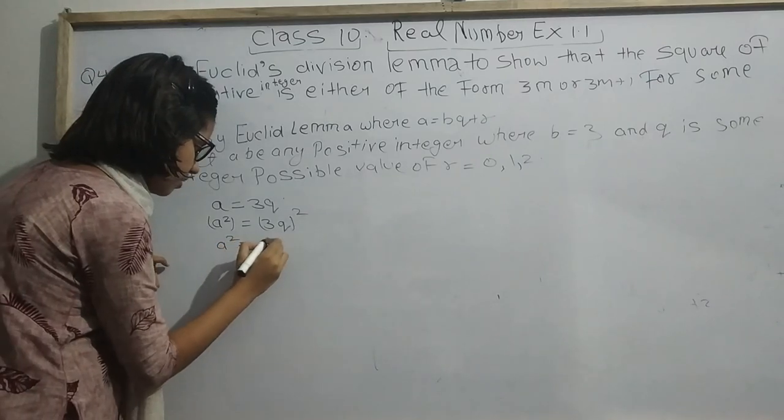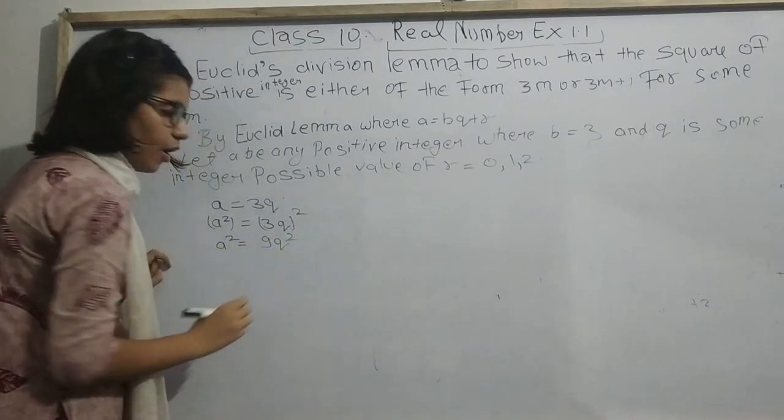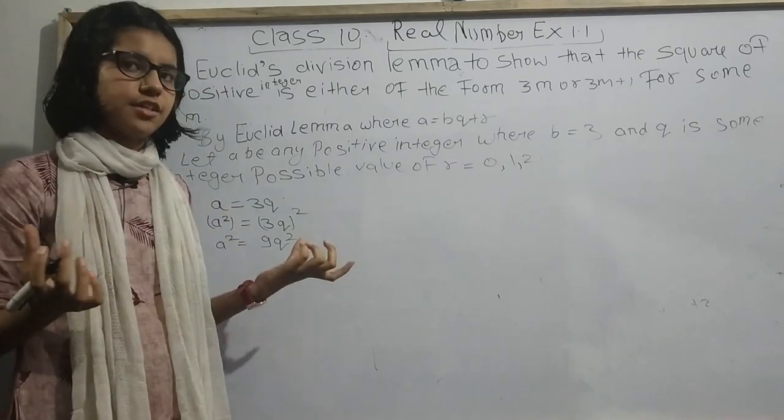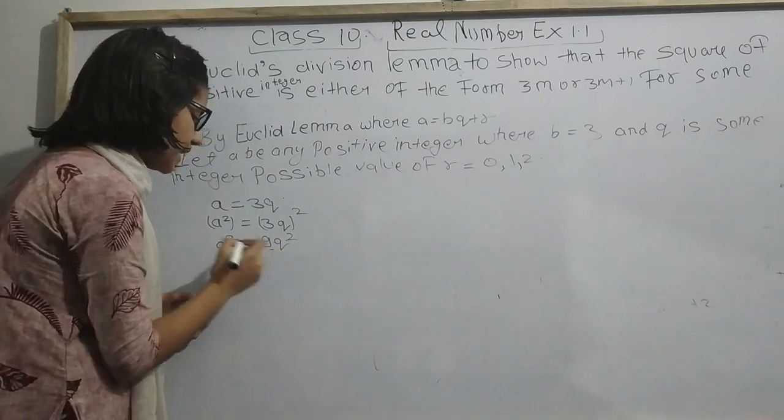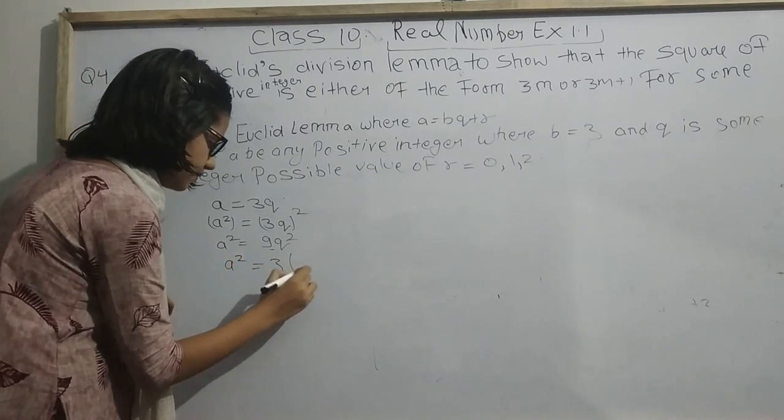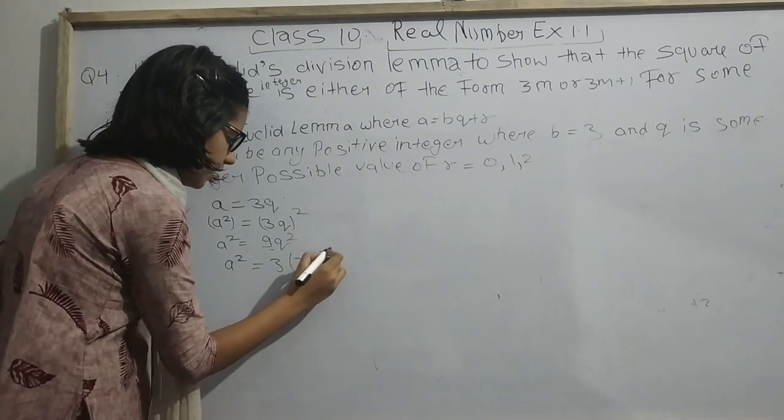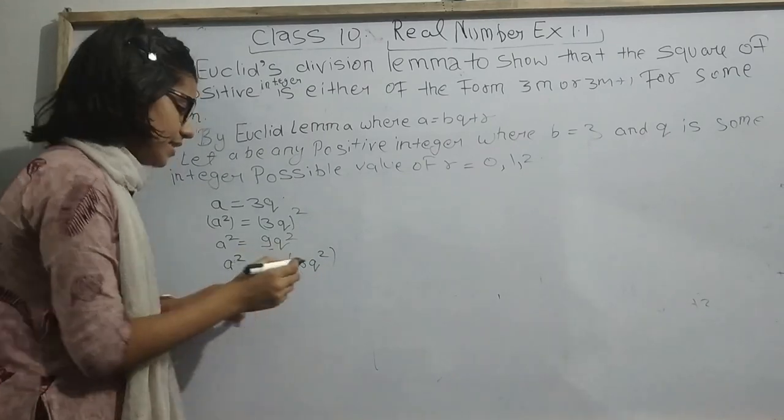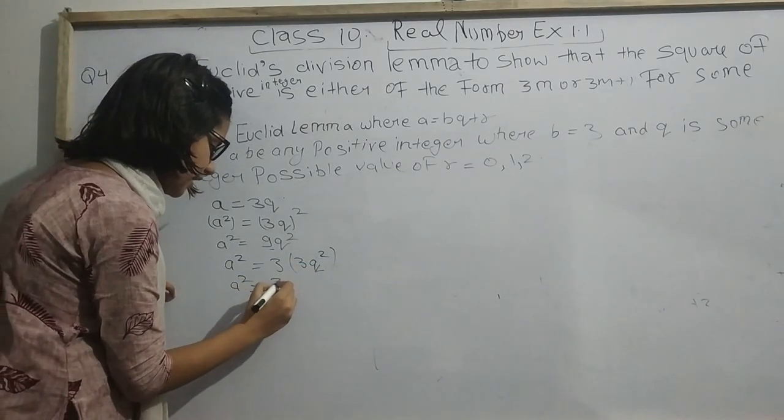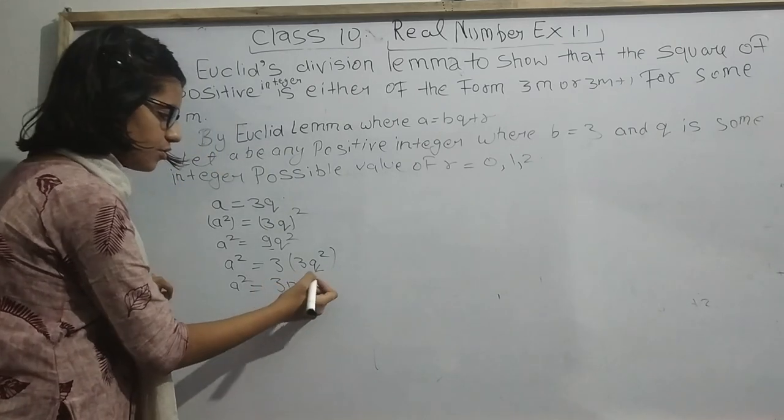A square equals 9Q square. We need to find a number that divides 9 completely. That is 3. So 3 times 3Q square. We will change 3Q square as M. So we can write 3M, where M equals 3Q square.